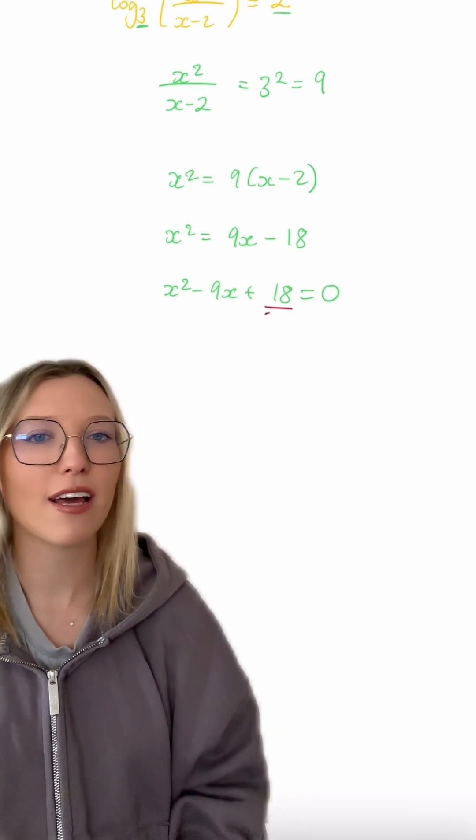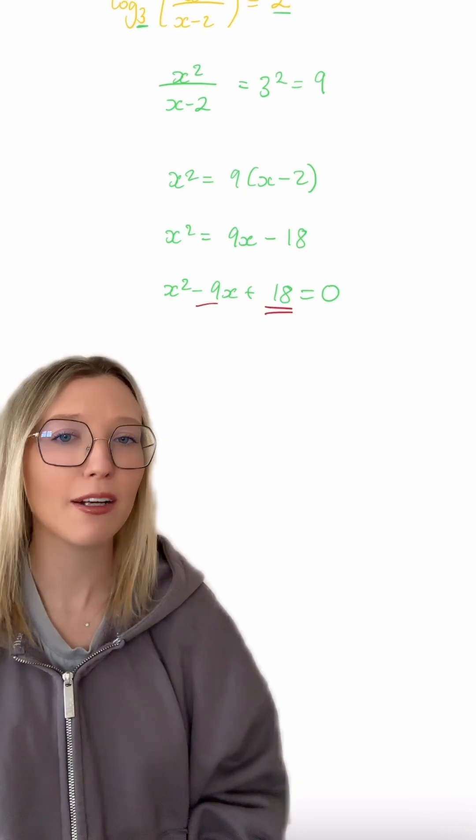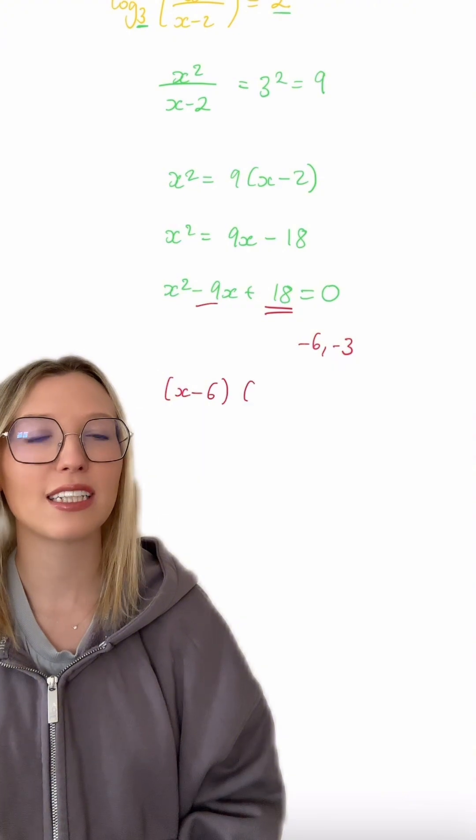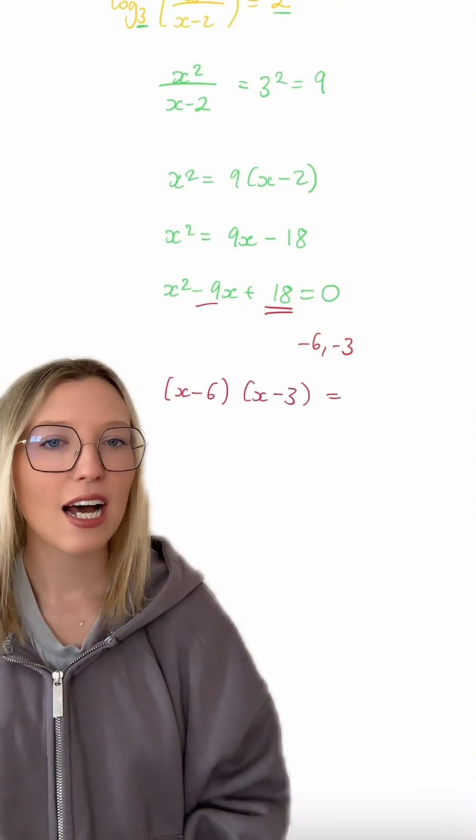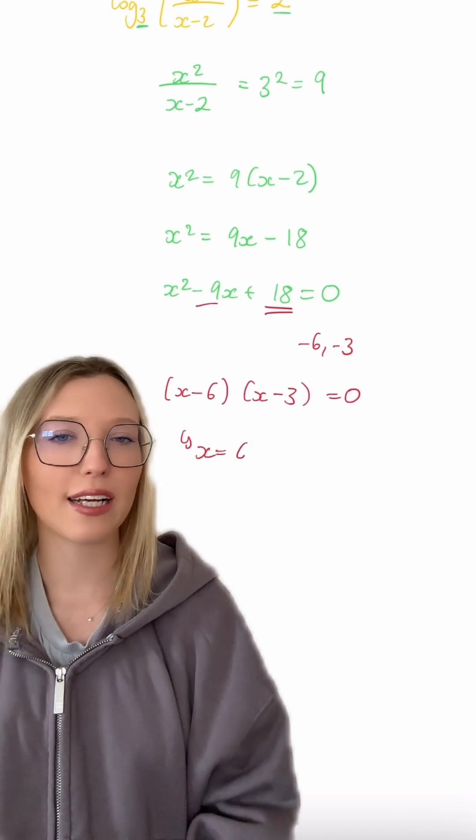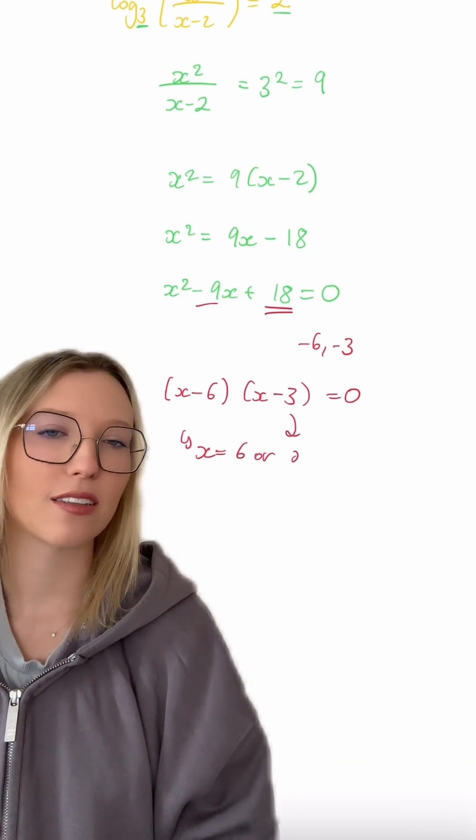So we're looking for a factor pair of 18 that adds together to give us minus 9. And that's going to be minus 6 and minus 3. So we get x minus 6, x minus 3 in the brackets. And as this equals 0, we know either x must equal 6 or x must equal 3 as the answer.